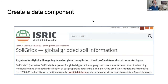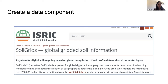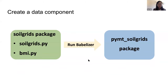We hope the community can also contribute their own data components, especially when you have a large data set and want more people to use it, or want to couple your data with other models in the PyMT modeling framework. Today I'm going to use the SoilGrids data component as an example. This data component fetches global gridded soil information from the SoilGrids system, which provides the spatial distribution of soil properties such as bulk density, clay, sand, and silt content.